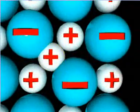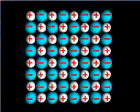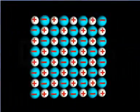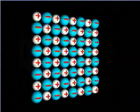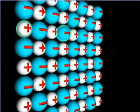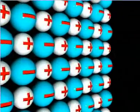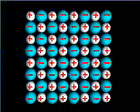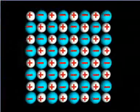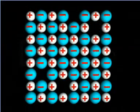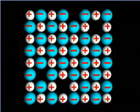Schottky defects, on the other hand, arise in ionic crystals having constituent ions of similar size. In such defects, equal number of cations and anions leave their lattice sites and create vacancies in the crystal.